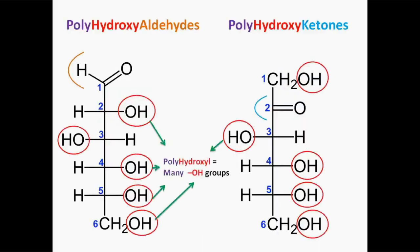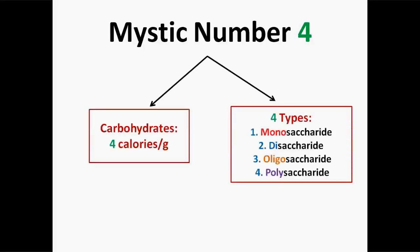So, carbohydrates are technically polyhydroxy aldehydes or polyhydroxy ketones. You remember the number 4 that I said you're going to see it in all episodes of season 1. Let's just use it for carbohydrates also. First of all, the number 4 tells us that there are 4 calories in 1 gram of carbohydrates and it also tells us that there are 4 categories of carbohydrates: monosaccharides, disaccharides, oligosaccharides and finally polysaccharides.